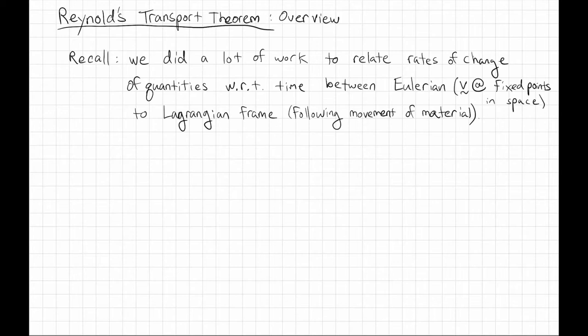So just to remind you, we did a lot of work in Chapter 3 to relate rates of change of quantities with respect to time between Eulerian and Lagrangian points of view. As a reminder, the Eulerian point of view is that we are going to try to characterize velocity at particular fixed points in space over time.